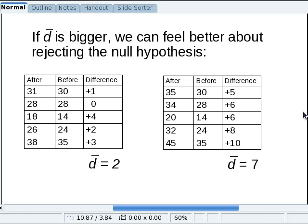Let's say we had done the experiment two different times. If the first time we got an average difference of only 2, and the second time we got an average difference of 7, which would you be more likely to say is an effect? We'd feel better about rejecting the null hypothesis in this case because it looks like there's more improvement. In fact, the people have improved more. There's a bigger difference between the after and the before scores.